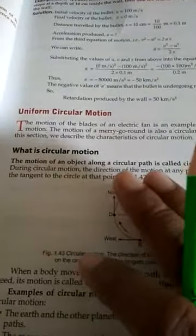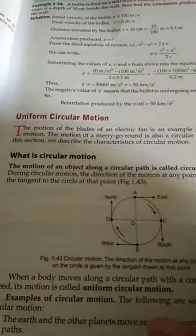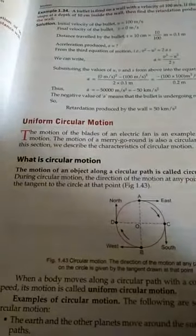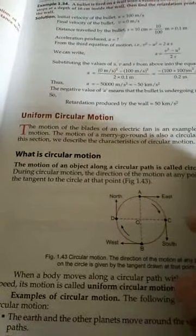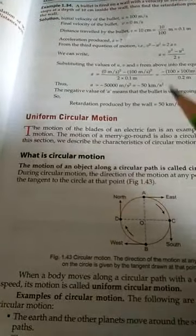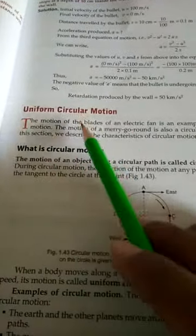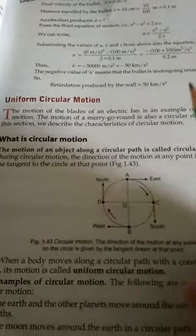If the body moving on the circular path covers equal distance in equal time intervals, then the motion of the body is known as uniform circular motion. So this way we understand uniform circular motion.